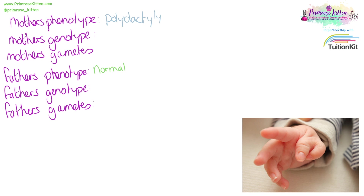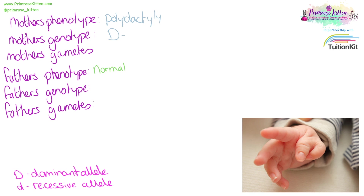I'm going to draw a genetic cross between somebody that has polydactyly and somebody that doesn't. The letter I'm going to use is D, because P is a rubbish letter to use in genetic crosses — the uppercase and lowercase P look virtually identical, whereas the uppercase and lowercase D are very different. So it's much easier to determine that D is the dominant gene and little d is the recessive gene.